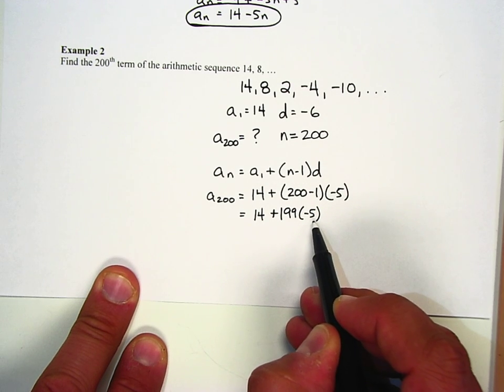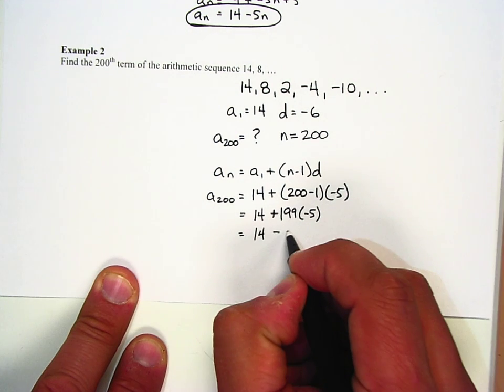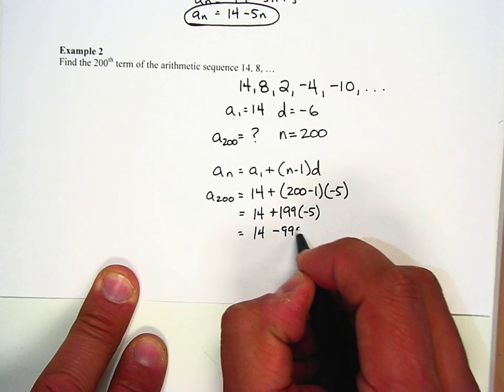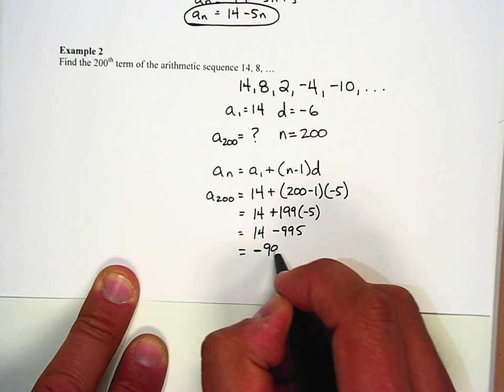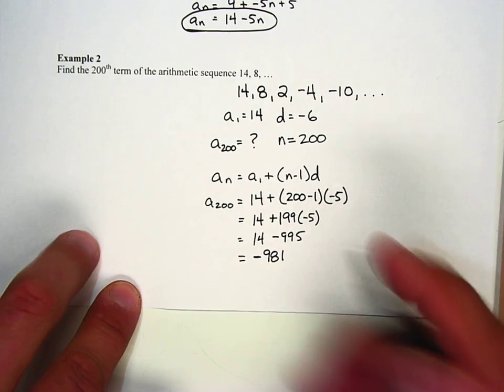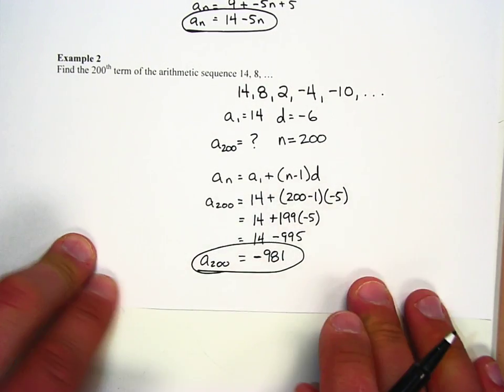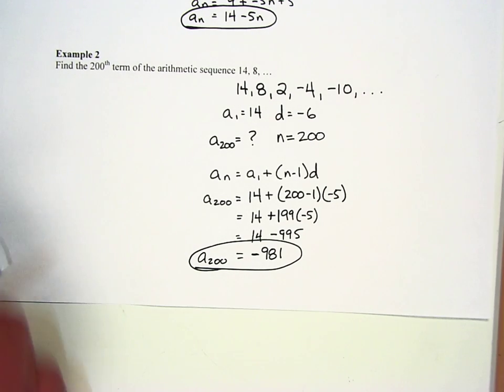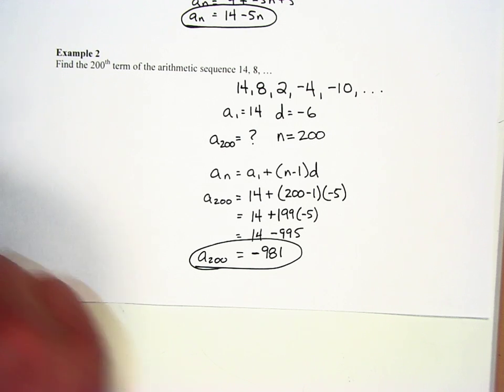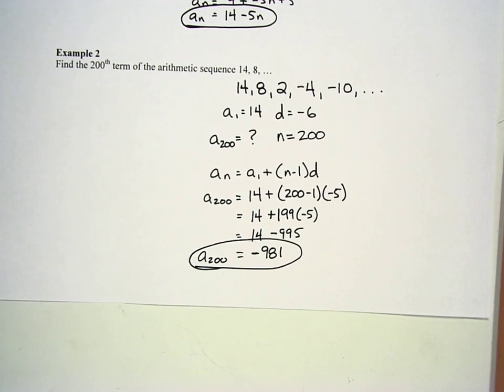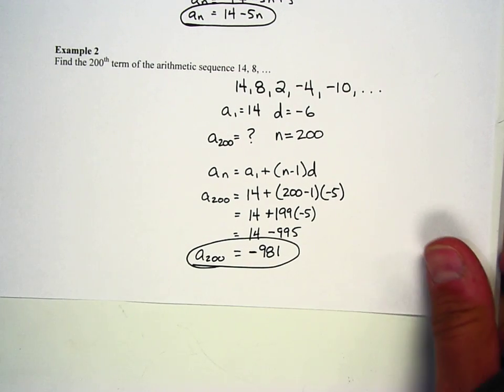199 times negative 5 is negative 995. So this is going to be 14 minus 995. If I combine those, I get negative 981. I think that's right. So the 200th term in this sequence is negative 981. If I wanted to, I could just go ahead and check that on my calculator and say 14 plus 199 times negative 5. Negative 981 does work. So that's our solution. One last example, and then we'll go on to the next video.